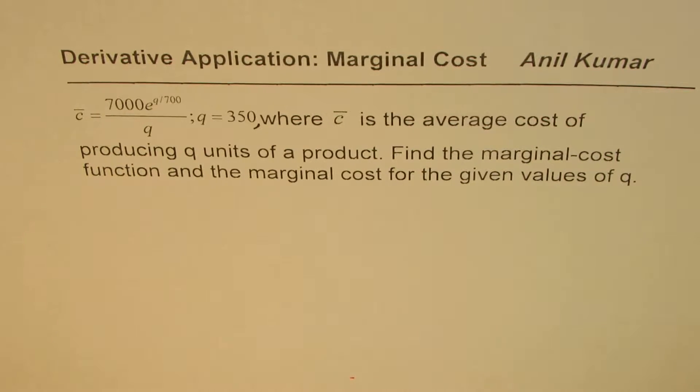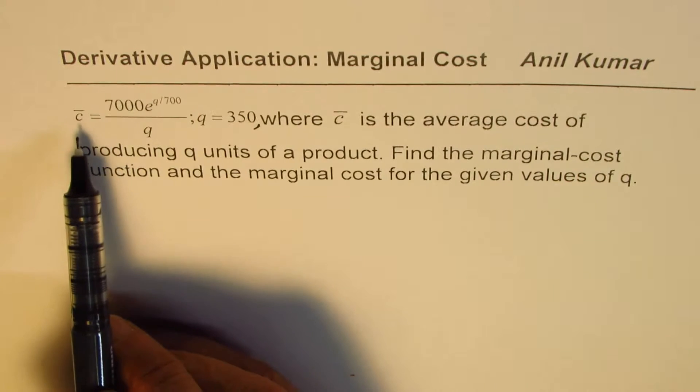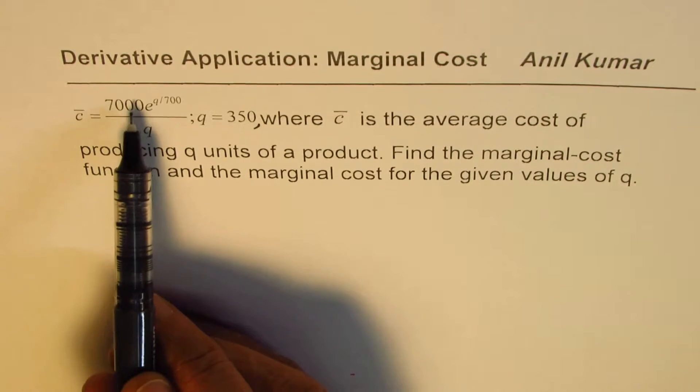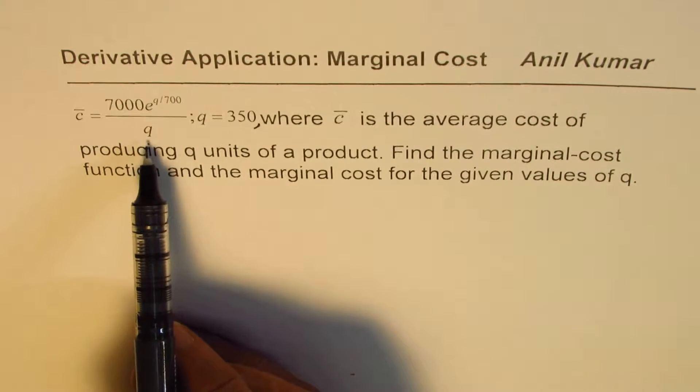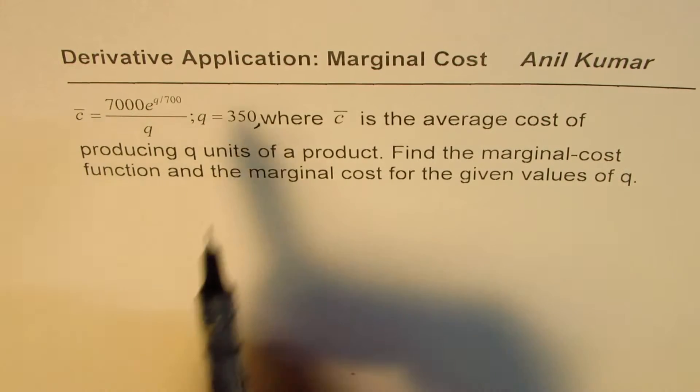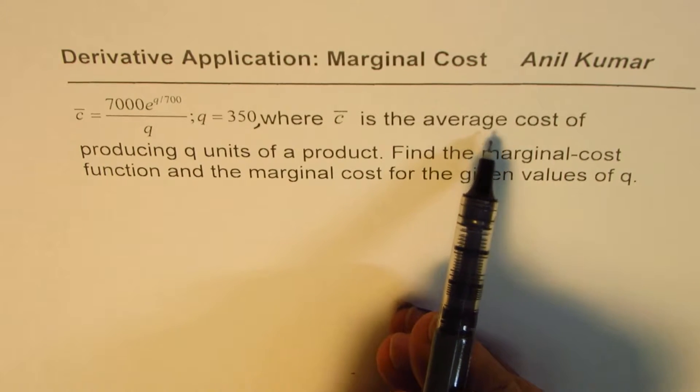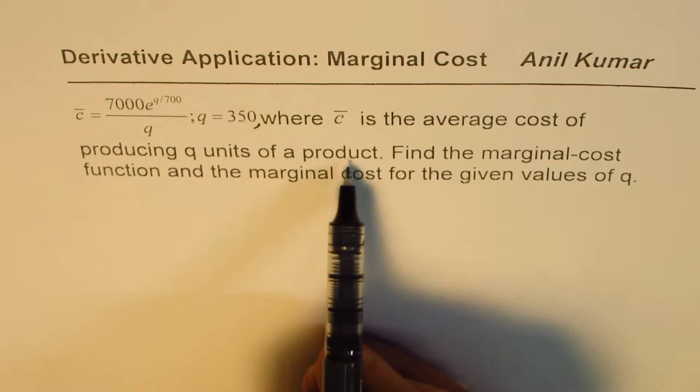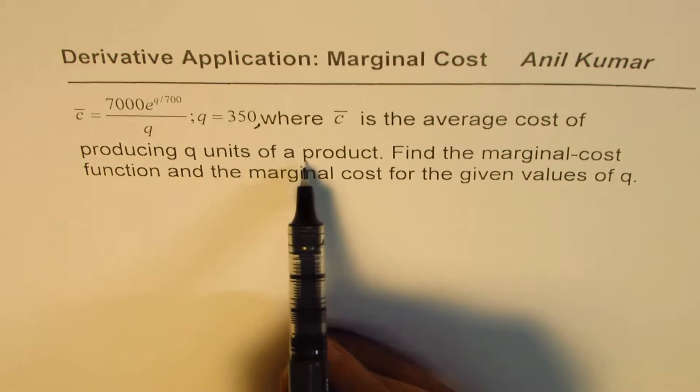I am Anil Kumar sharing with you an important question from my student Ryan. It is an application of derivatives regarding marginal cost. We are given a function c̄ = 7000e^(q/700)/q where q = 350. Here c̄ is the average cost of producing q units of a product.